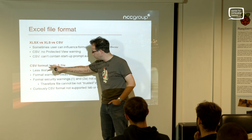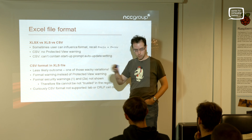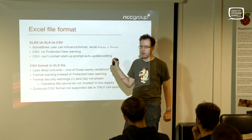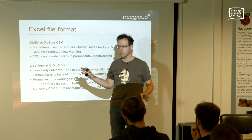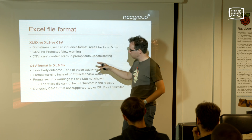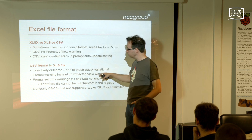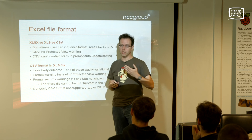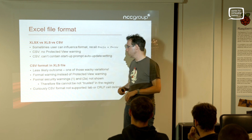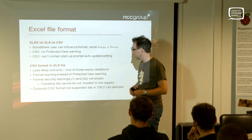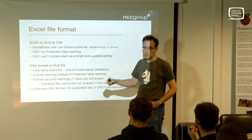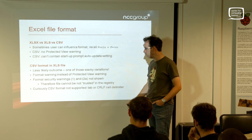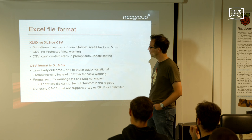I also tried CSV format in an XLS file - .xls extension but CSV content. That's a less likely outcome but I have seen it in the wild in really wacky variations where you have total control of the file. If you get CSV format in an XLS file, you don't get a protected view warning even though it's .xls - you get a format warning instead, which is less alarming: it just says this is the wrong format rather than a security warning banner. A couple of other warnings disappear too. Downside: the file won't be remembered as trusted since you didn't click 'I trust this'.